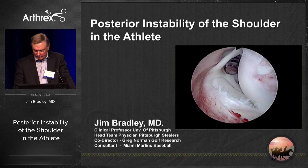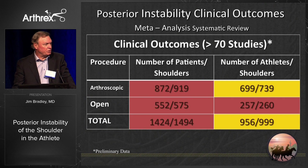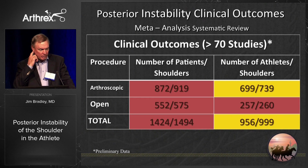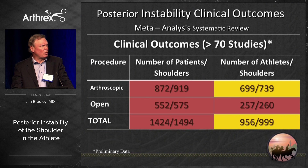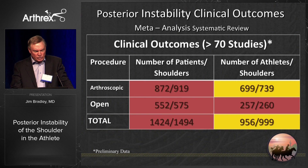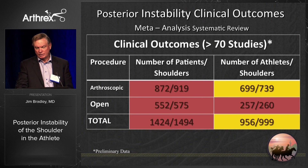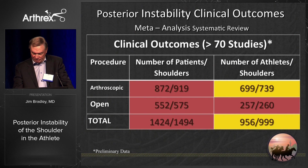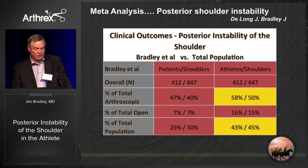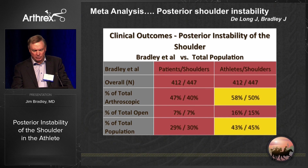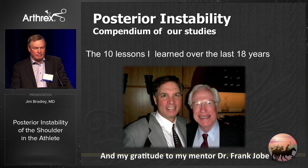Good morning. I'm going to speak about posterior instability of the shoulder, one of my favorite topics. We just finished a meta-analysis study — Jeff DeLong, my fellow, and I — and we found over 1,124 papers in the world on posterior instability, of which over 70 were actually pertinent to what we do. The total number of shoulders was 999, and the total number of athletes was 956. Of all the athletes in the literature done arthroscopically, we had 58% of them done by our group and 50% of the shoulders. Of the total population — open and arthroscopic — our group had 43% of the athletes and 45% of the shoulders. I want to tell you about posterior instability: the continuum, the compendium of our studies and what we feel.